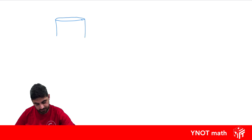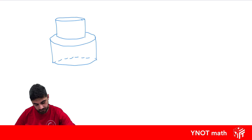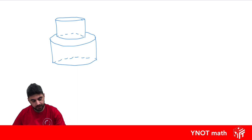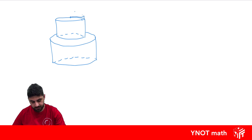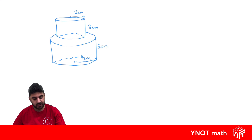The second example is a cylinder on top of another cylinder. The radius of the top cylinder is 2 centimeters with a height of 3 centimeters. The radius of the bottom cylinder is 4 centimeters with a height of 5 centimeters. We want to find both the volume and the surface area.